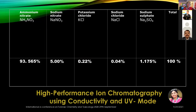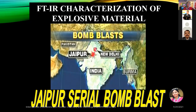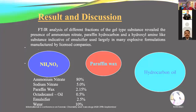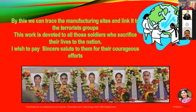The presence of ammonium nitrate, sodium nitrate, ammonium chloride, sodium chloride, and sodium sulfate was established. The FTIR characterization of explosive material was performed, identifying paraffin, RDX, and hydrocarbon oil with 100% accuracy. The paraffin hydrocarbon and hydroxylamine-like substance, indicative of an emulsifier, is used largely in explosive formulations manufactured by licensed companies. By this, we can trace manufacturing sites and link them to the terrorists behind the blasts. This work we dedicate to all soldiers who sacrificed their lives for the nation, and I sincerely credit them for their courageous efforts.